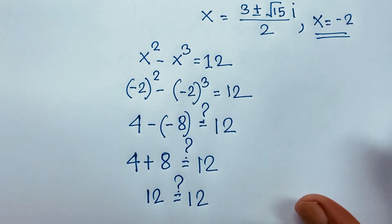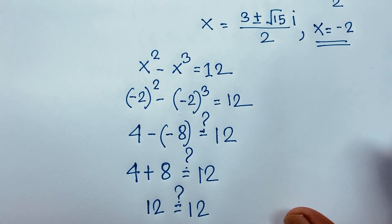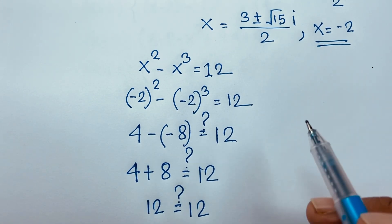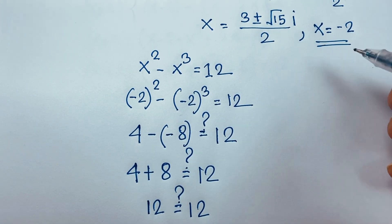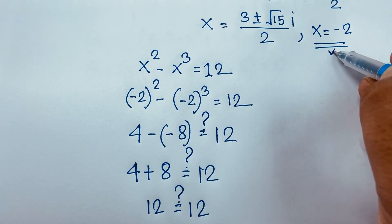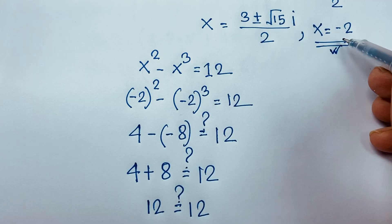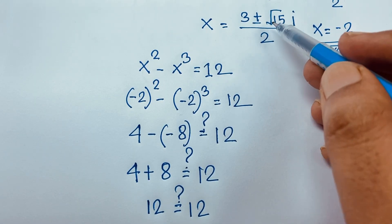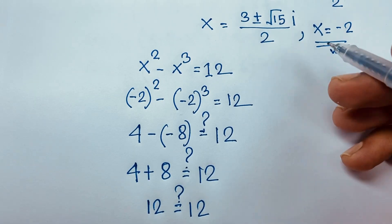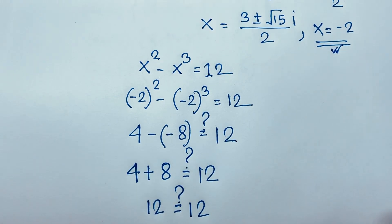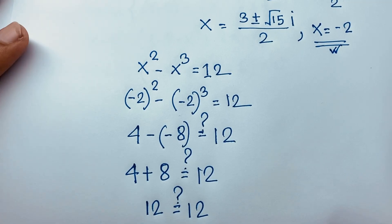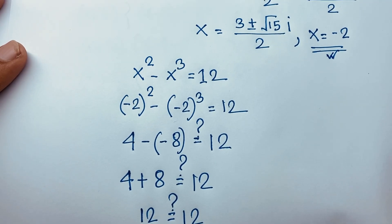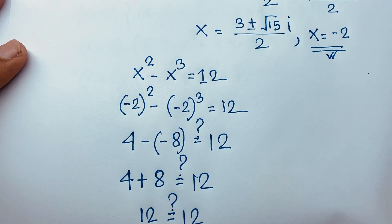So we found three solutions in total, because this is a cubic equation. The first solution x equals negative 2 is a real number, while the other two are complex numbers. Thank you all. If you enjoyed this video, please subscribe to our channel for other interesting videos. Goodbye, take care.